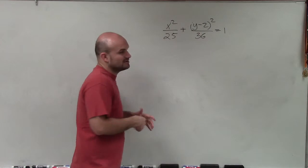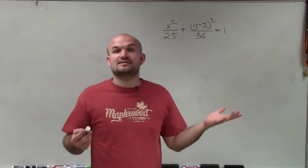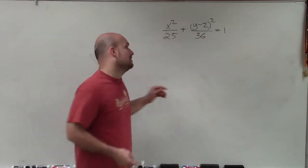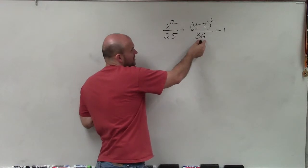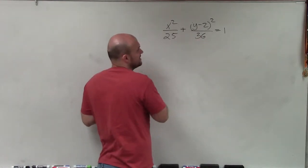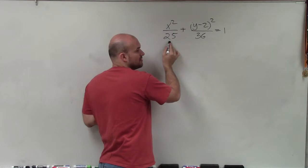So to do that, we always know that the a in an ellipse is always the larger number. And you can see that the larger number squared is going to be 36 over 25. Therefore, I can say that this term is a squared, this term is b squared.